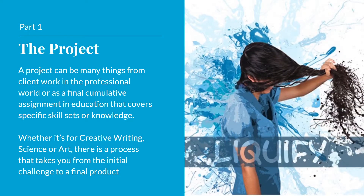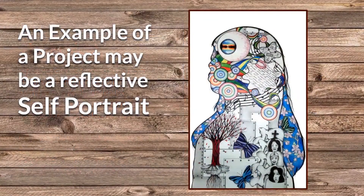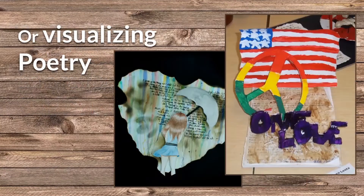Part 1: The Project. A project can be many things — from client work in the professional world, or as a final cumulative assignment in education that covers specific skill sets or knowledge. Whether it's for creative writing, science, or art, there is a process that takes you from the initial challenge to a final product. An example of a project may be a reflective self-portrait or visualizing poetry.